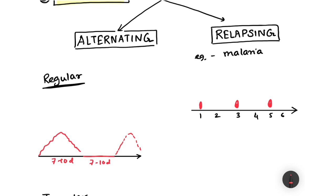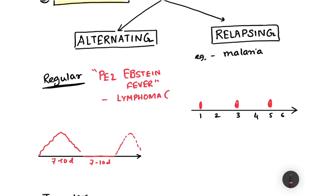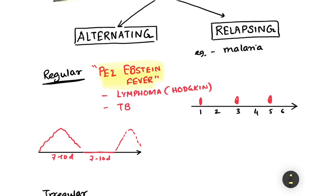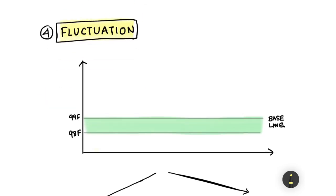Regular alternating fever has a specific term: Pel-Epstein fever — a very important name from an exam point of view. Pel-Epstein fever is seen in cases of lymphoma, particularly Hodgkin's lymphoma, and sometimes in tuberculosis.